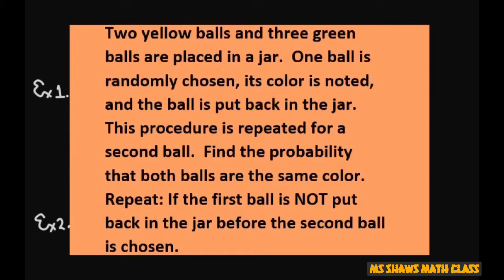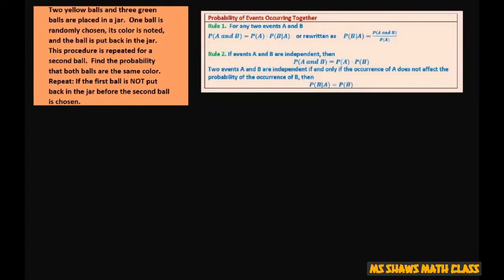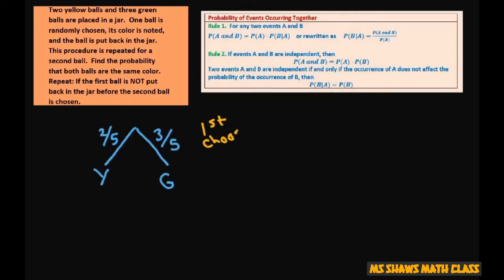For example two, we're going to repeat but without replacement. So for the first example, what we're going to do is draw a tree diagram and show this scenario. The probabilities — we draw these branches for yellow and green. Let's label this as the first choice.